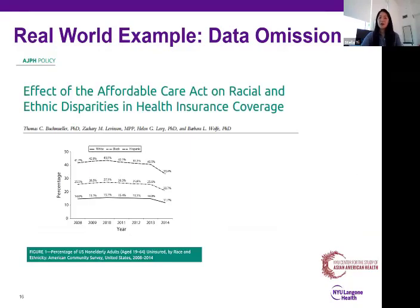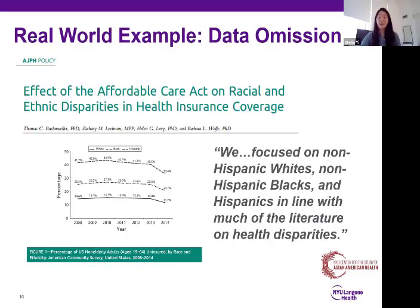Here's another example from the American Journal of Public Health, looking at the effect of the Affordable Care Act on racial ethnic disparities in health insurance coverage. This graph is also stratified by racial ethnic groups, and Asian American and Native Hawaiian Pacific Islanders are also not included in this analysis — even though this was using census data, which would presumably cover everyone. Their methods section states: 'We focused on whites, Blacks, and Hispanics in line with much of the literature on health disparities.' This just perpetuates the idea that Asian Americans are not a health disparity population.